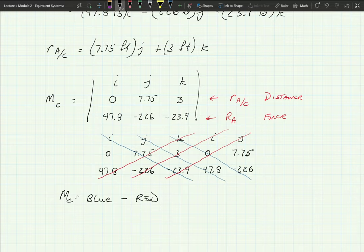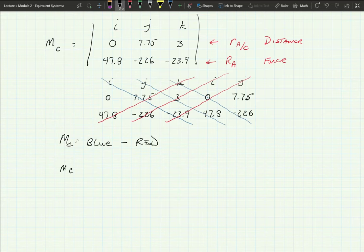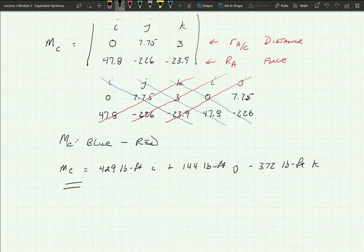All right. So, when I get done with this solution, what I get is this. M_C is equal to 429 pound feet. All right. And that's in the I vector. Plus 144 pound feet in the J vector minus 372 pound feet. And that's in the K. Okay. And that is your answer, actually. And that's all there is to that.